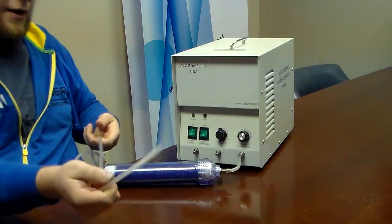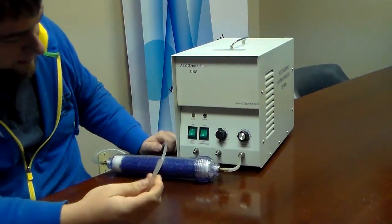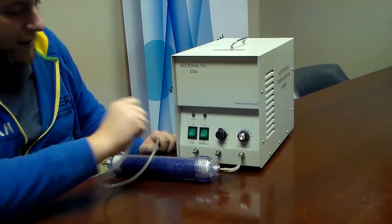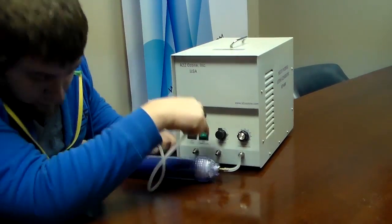And then you'll take the other end of the part that is connected to your silica air dryer and that will be connected to your O2 end.